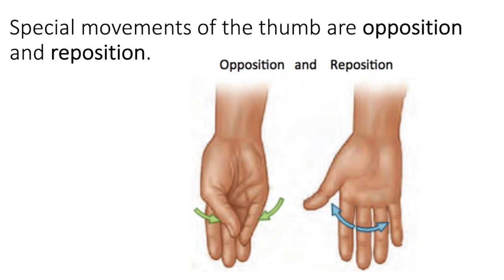Flexion and extension, and abduction and adduction, occur in many places. Special movements include those of the jaw — elevation, depression, protraction, retraction — as well as special movements of the foot, the forearm, and the thumb. All of these movements enable your body to move and alter from standard anatomical position.